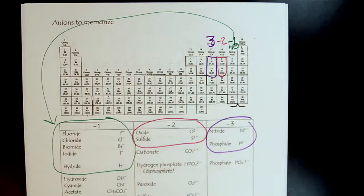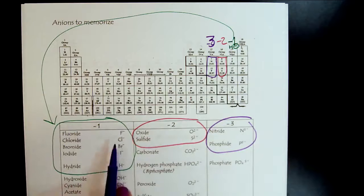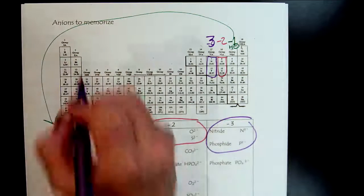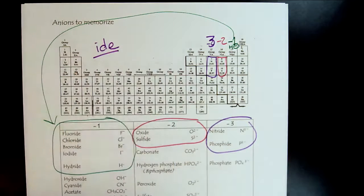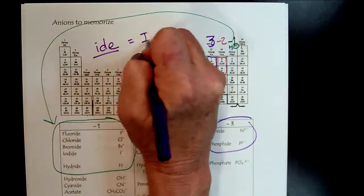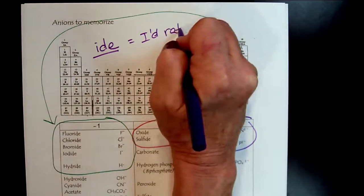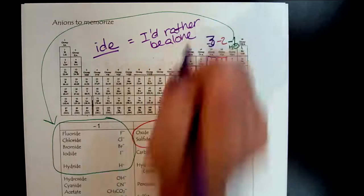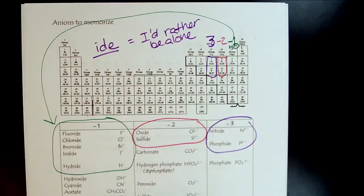Now, notice the ides. So all of these ions are monatomic. There's only one. So when you see that ides suffix, you can think of it as I'd rather be alone. Okay? So that will help.